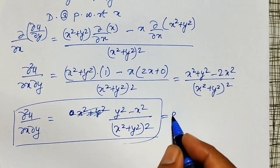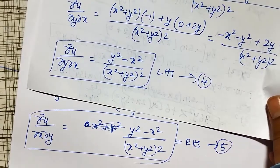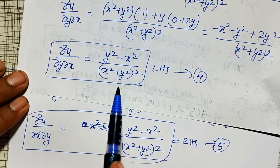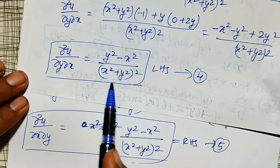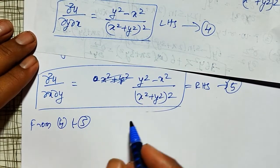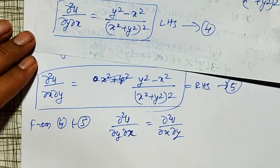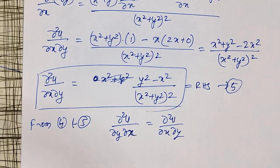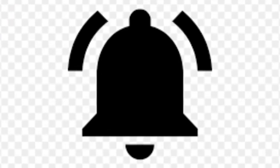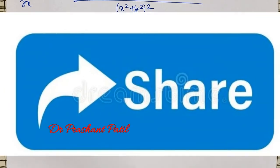Comparing equation number four and equation number five, the right-hand sides are equal: both give (y² − x²)/(x² + y²)². Therefore ∂²u/∂y∂x = ∂²u/∂x∂y, which is what we wanted to prove. More examples will be solved in next videos. Please subscribe the channel, hit the bell icon for notifications, like, comment, and share this video. Thank you.